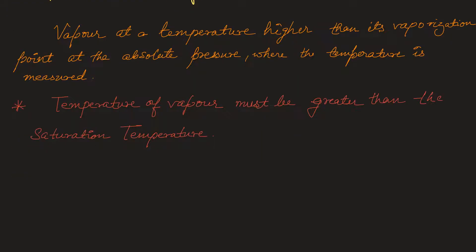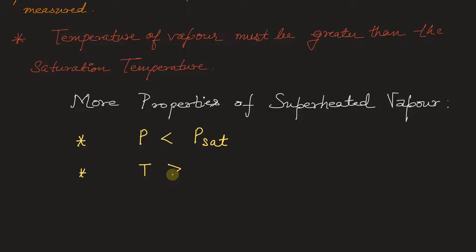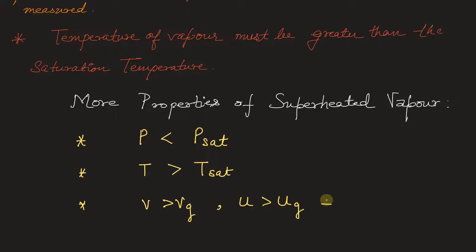Some other properties of superheated vapor: its pressure must be lesser than the saturation pressure at a particular temperature, so P must be lesser than P_sat. Its temperature must be greater than the saturation temperature. Also, its specific volume, internal energy, and enthalpy are greater than those of the saturated gas at a certain temperature and pressure: V > VG, U > UG, and H > HG at fixed pressure and temperature.